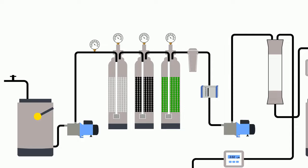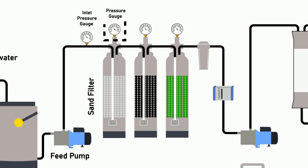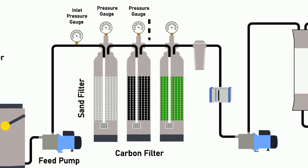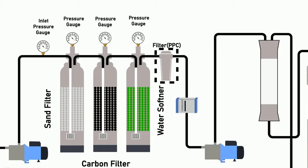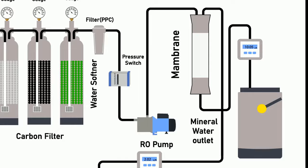The parts include: tap water, feed tank, feed pump, inlet pressure gauge, sand filter with pressure gauge, carbon filter with pressure gauge, water softener with pressure gauge, PPC filter, pressure switch, RO pump, membrane filters, waste water outlet, mineral water outlet, flow meters, and storage tank.